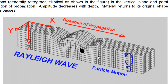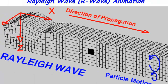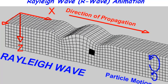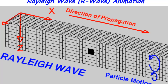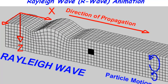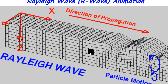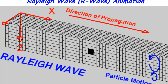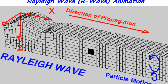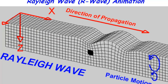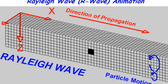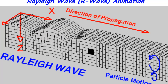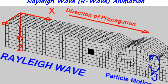One type of surface wave is called the Rayleigh wave. Here's the surface, and this wave looks somewhat similar to the S wave, but it's on the surface of the Earth. If you watch closely, you can see it moves in a circular, elliptical pattern — kind of a rolling action.